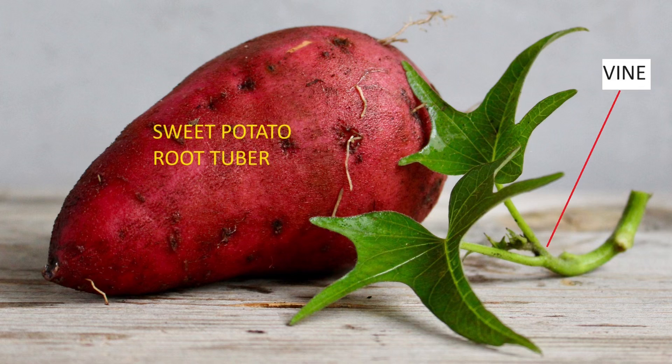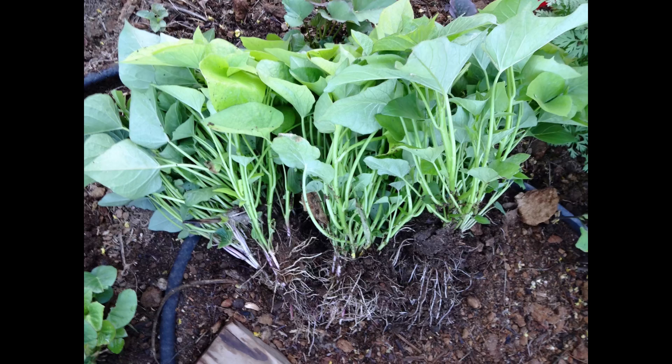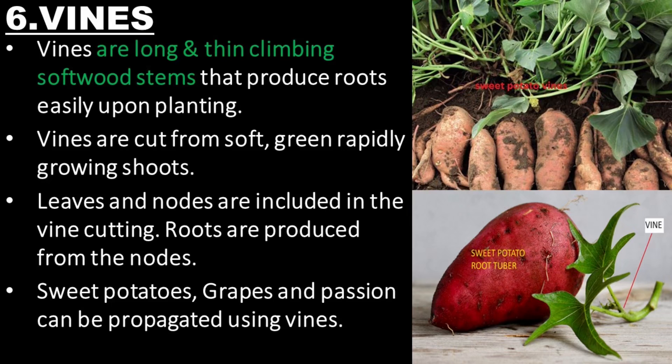Vines are long and thin climbing softwood stems that produce roots easily upon planting. Vines are cut from soft, green, rapidly growing shoots. Leaves and nodes are included in the vine cutting, and roots are produced from the nodes. Sweet potatoes, grapes, and passion fruit can be propagated using vines.